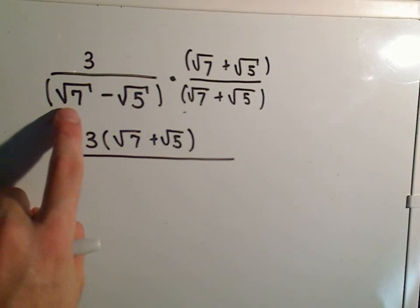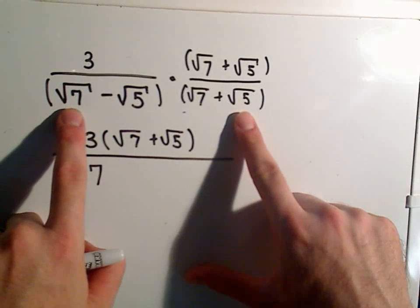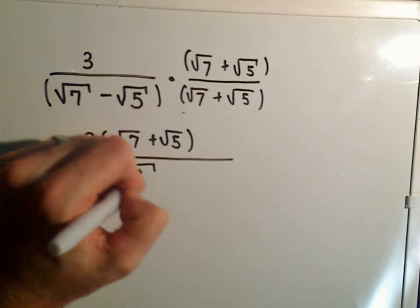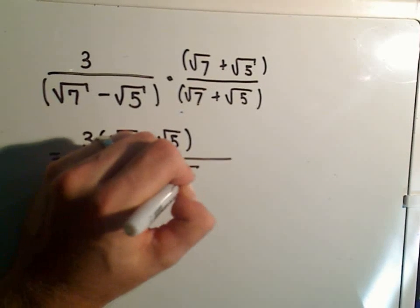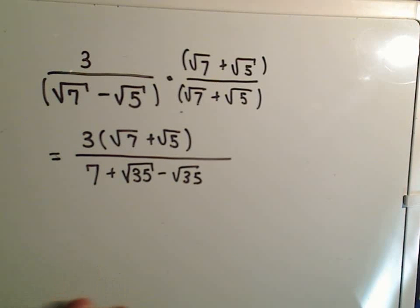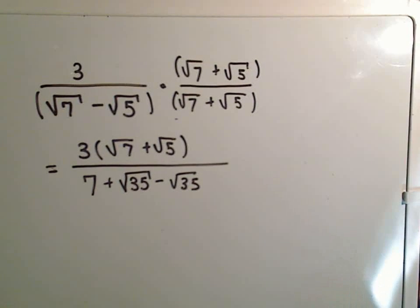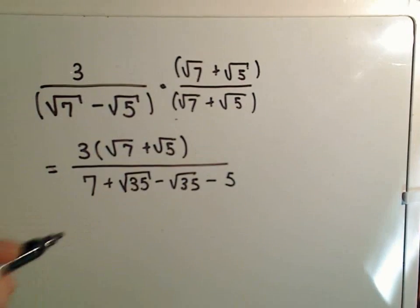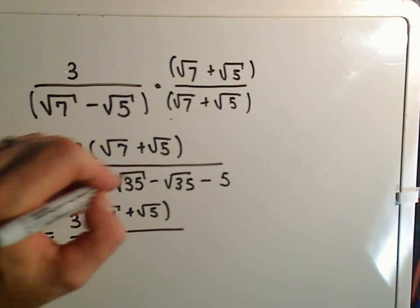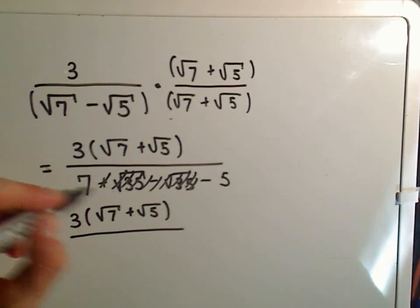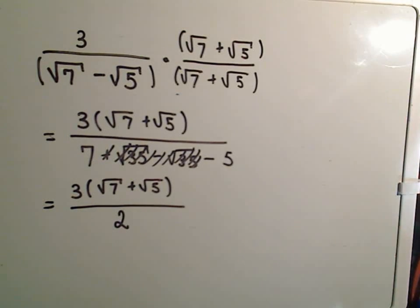On the bottom, I have to FOIL things out. The square root of 7 times the square root of 7 gives me 7. Square root of 7 times positive square root of 5 gives positive square root of 35, and the inside term gives negative square root of 35 — those cancel. That's the whole point of multiplying by the conjugate: the middle terms cancel. Then negative square root of 5 times positive square root of 5 gives negative 5. So I'm left with 7 minus 5, which is 2. The final answer is 3 times the quantity square root of 7 plus square root of 5, all over 2.